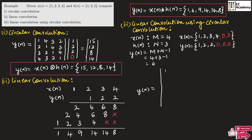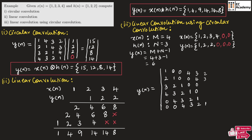The first column of the x of n matrix is 1, 2, 3, 4, 0, 0. Each subsequent column is a circular shift of the previous: the second column places the last element at the top, giving 0, 1, 2, 3, 4, 0, and so on for all six columns following the circular shift pattern. We then write the h of n column vector as 1, 2, 2, 0, 0, 0.